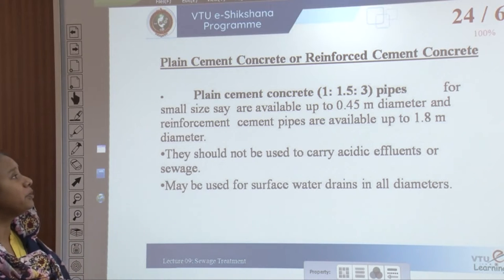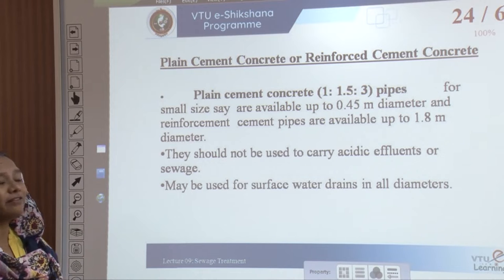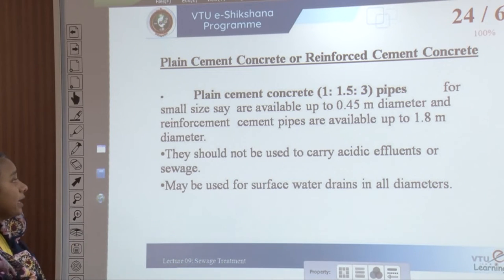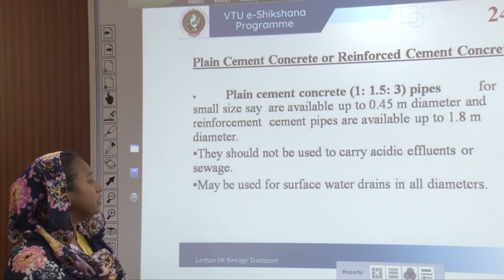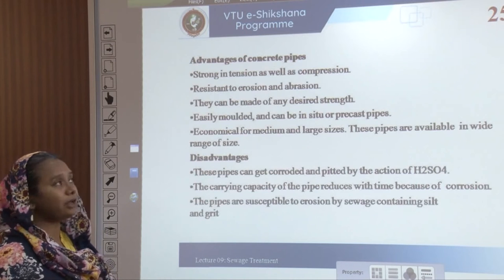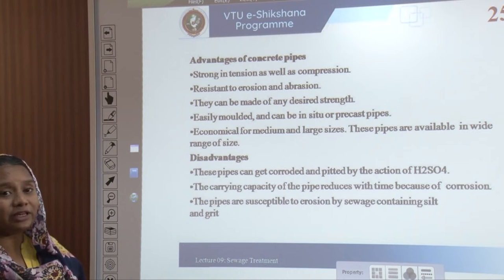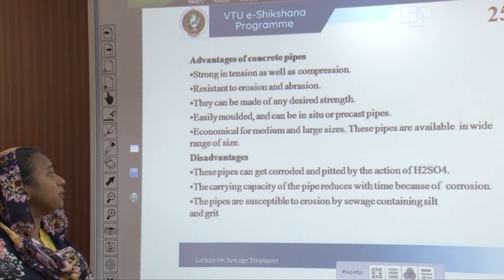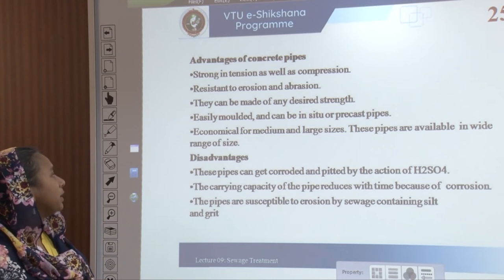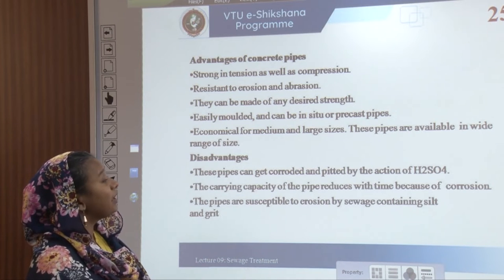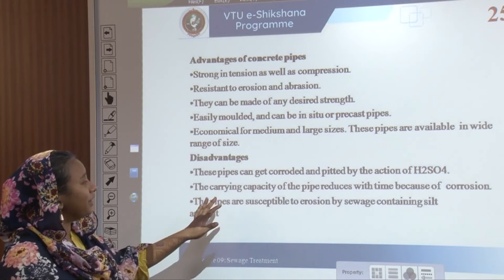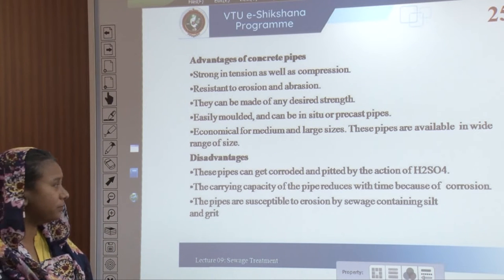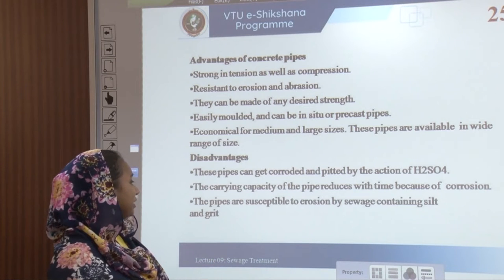Plain cement concrete or reinforced cement concrete pipes are available in smaller sizes up to 2.45 meters diameter, and reinforced cement pipes up to 1.8 meters diameter. They should not carry acidic effluents and should be used for surface draining. Advantages: stronger in tension and compression, resistant to erosion and abrasion, can be made of any desired strength, easily molded or precast, economical for medium and large sizes. Disadvantages: they get corroded and pitted by H₂SO₄ action, carrying capacity reduces over time, and they are susceptible to erosion by sewage containing silt and grit.